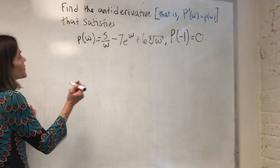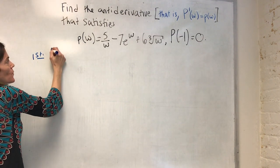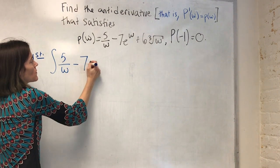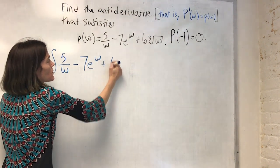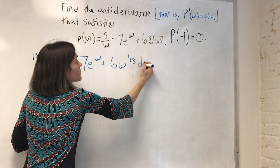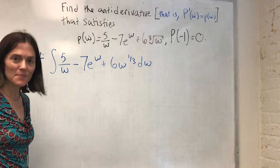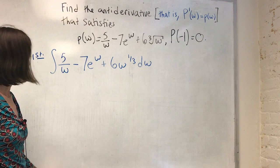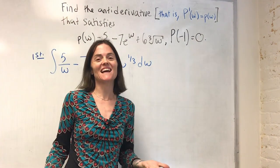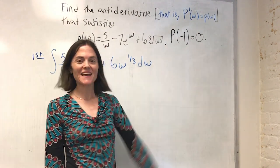So little p is this function. And then capital P of minus one is zero. The first thing we want to do, we'll do this in two steps. We want to find this. This will give me all antiderivatives. There will be a plus c. And then I will use my initial condition.